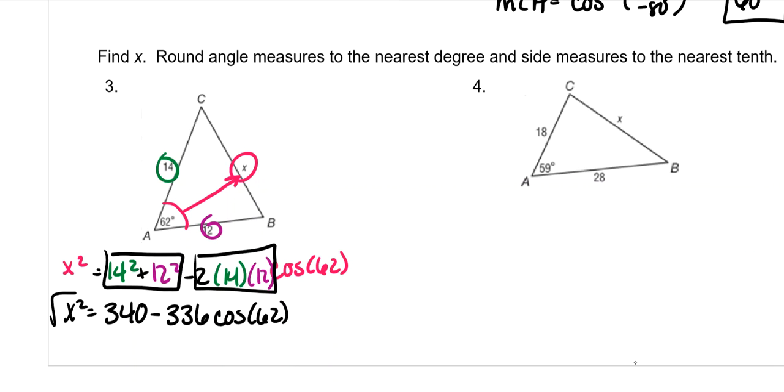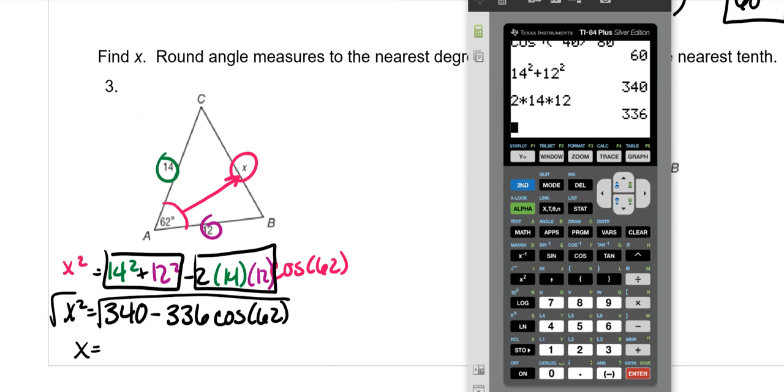So we take the square root of both sides, and we're going to put all of this stuff on the right-hand side in our calculator. So square root first, 340 minus 336. And you can actually go ahead and put cosine of 62. It should still work the same. Yep. So 13.50 is just 13.5.